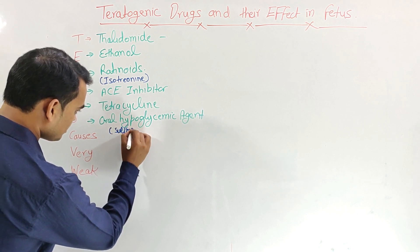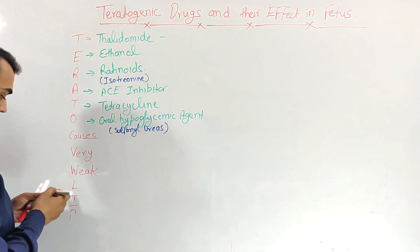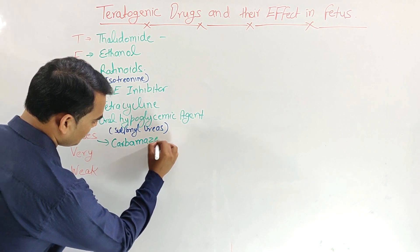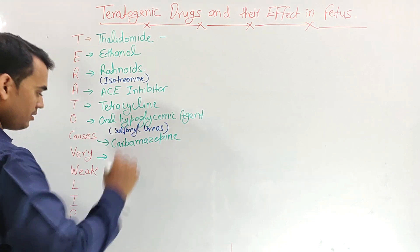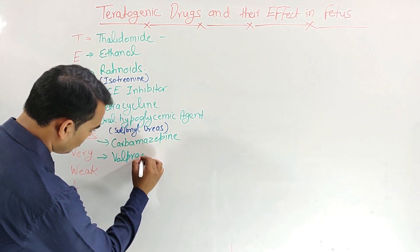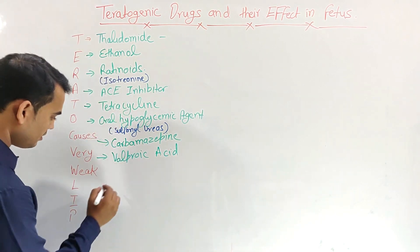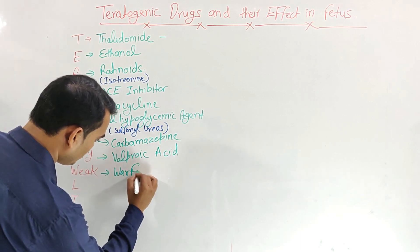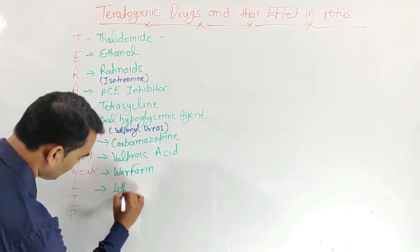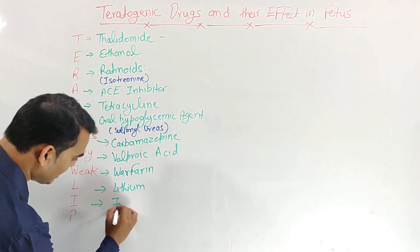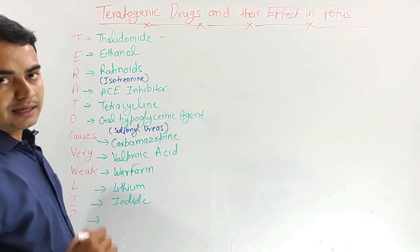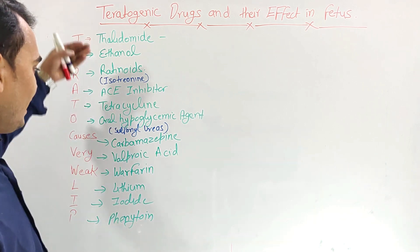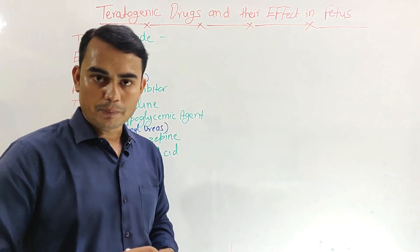Continuing the mnemonic: C is for Carbamazepine. V is for Valproic acid. W is for Warfarin, the oral anticoagulant. L is for Lithium. I is for Iodide. And finally P is for Phenytoin. So by this trick — 'Terato Causes Very Weak Lip' — we can remember all the drugs with teratogenic properties.